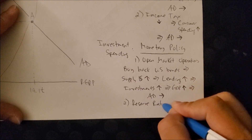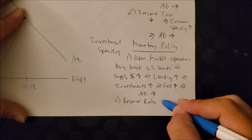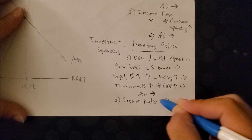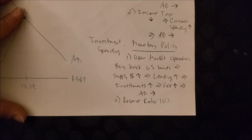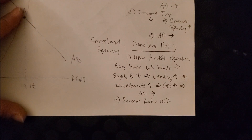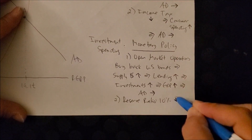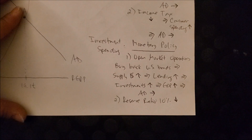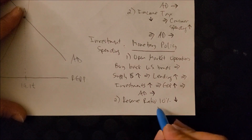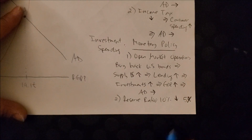The second monetary policy tool is the reserve ratio. Typically, banks must hold 10% of their assets in reserve in case of a crisis. For example, if you have $100 in assets and the reserve requirement is 10%, you cannot lend $10 of that. If the Fed wants to stimulate the economy, it can lower the reserve ratio — say from 10% to 5%.